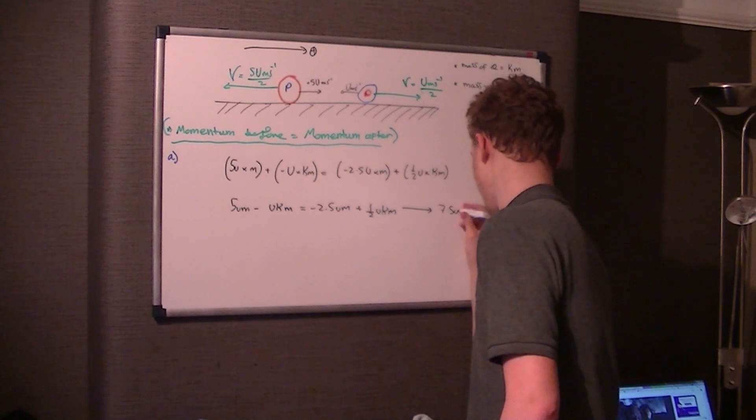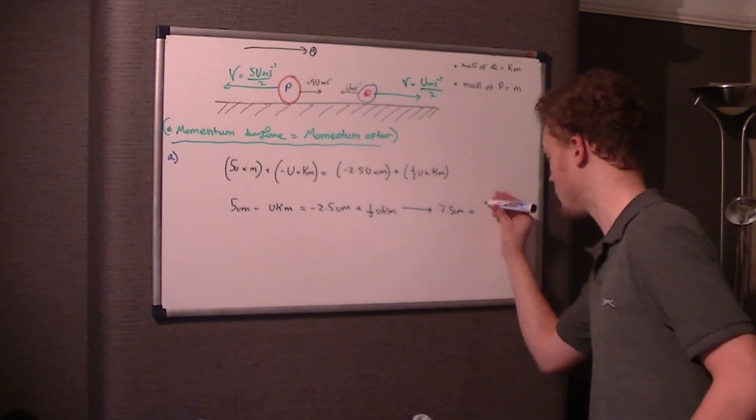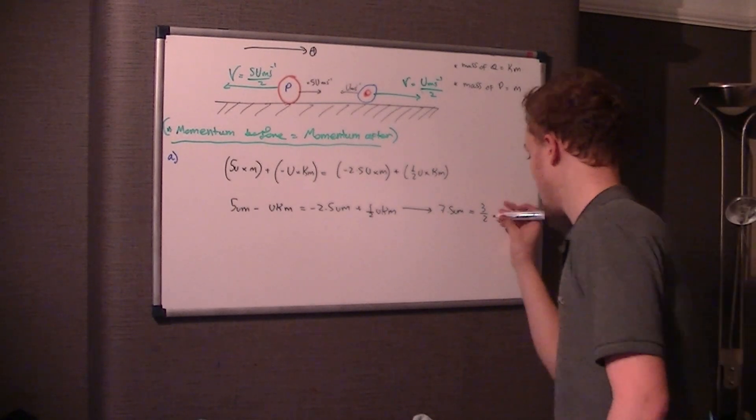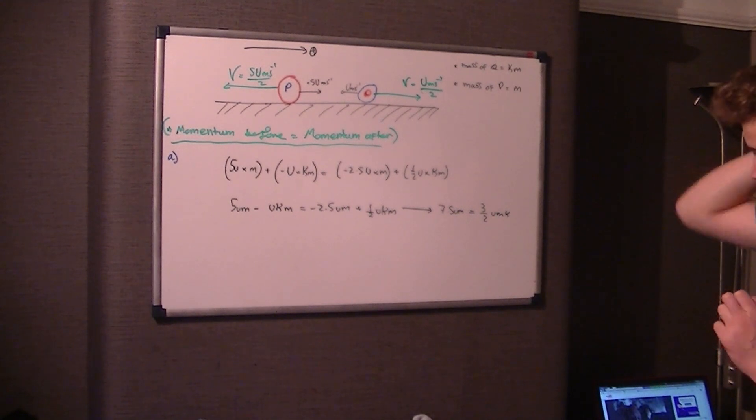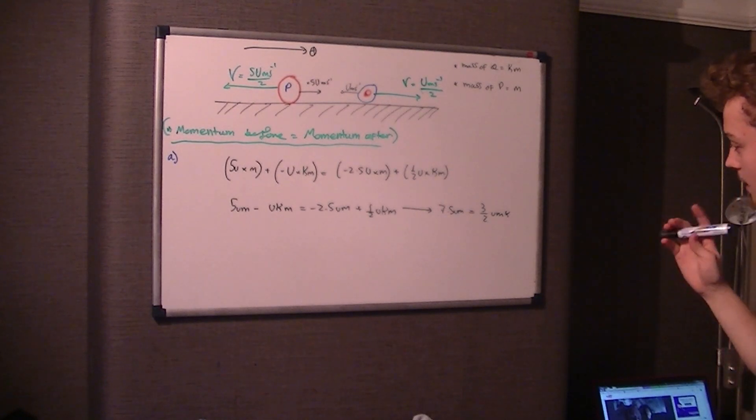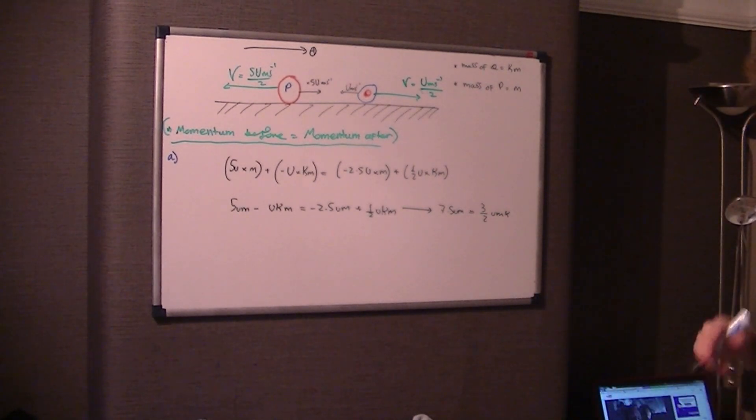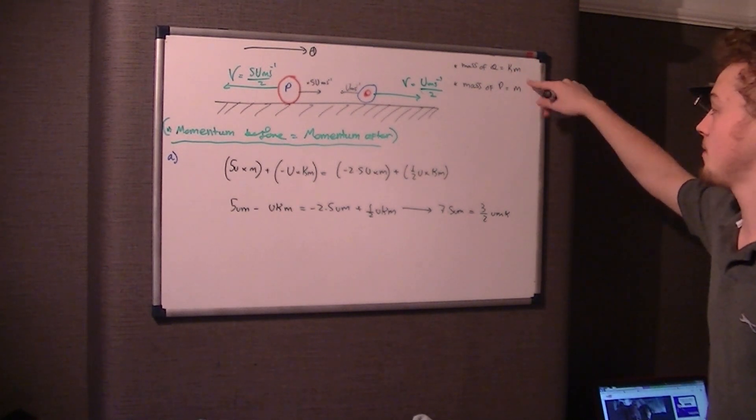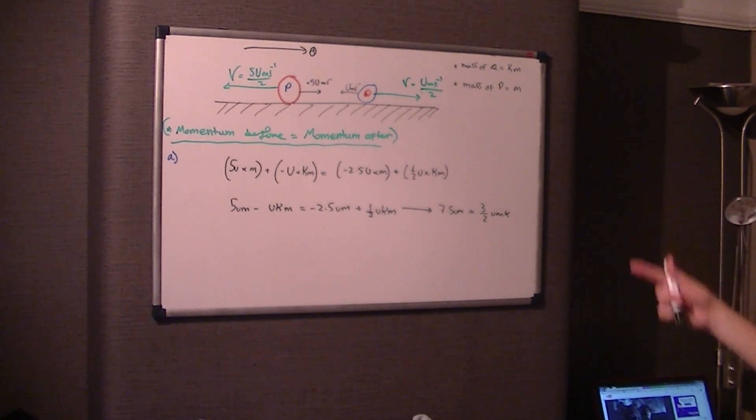So what we do is add 2.5UM to both sides to get rid of it on this side. So therefore we get 7.5UM on this side. And we add UKM to both sides to get rid of it on this side as well. So that gets us 3 over 2, so that's equal to 3 over 2 UKM. It's actually probably easier writing, instead of UKM, this means exactly the same thing, but UMK. So that's the same as UKM, just written in a different order. And that's so we can do something along the lines, because what we're actually trying to find, remember, is K. We've got UM and UMK. We've got UM on this side and UM on this side. The M is the same, and also we've got U. And U is the same on either side.